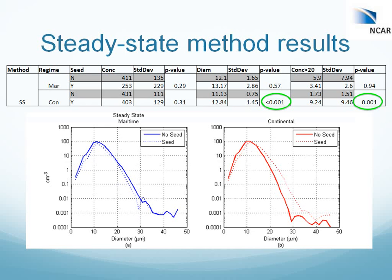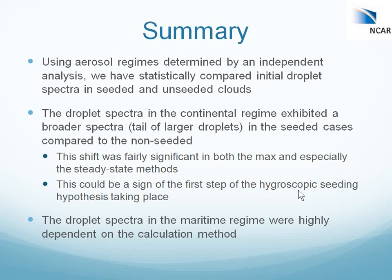Looking at the same thing for the steady-state method, we see that again in the continental regime there is a tail of larger drops and larger mean diameters on average for the seeded spectra compared to the unseeded spectra. These differences are highly significant this time, whereas in the maritime regime we're not seeing that. This is, to some extent, what we expected to see. We did not expect as much of a response in the maritime regime because those natural spectra typically already had a tail of larger drops greater than 20 microns. In both methods, this was a fairly common result.